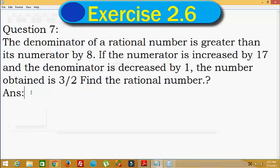Here the question is: the denominator of a rational number is greater than its numerator by 8. If the numerator is increased by 17 and the denominator is decreased by 1, the number obtained is 3/2. Find the rational number.